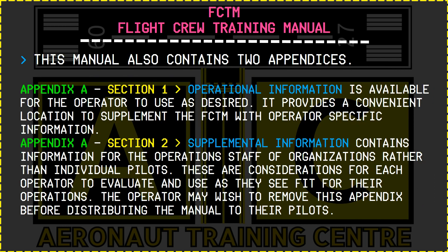FCTM also contains two appendices. In Appendix A, Section 1, operational information is available for the operator to use as desired — it provides a convenient location to supplement the FCTM with operator-specific information. Appendix A, Section 2 contains supplemental information for the operations staff of the organization rather than individual pilots. These are considerations for each operation to evaluate and use as they see fit, and the operator may wish to remove this appendix before distributing the manual to their pilots.